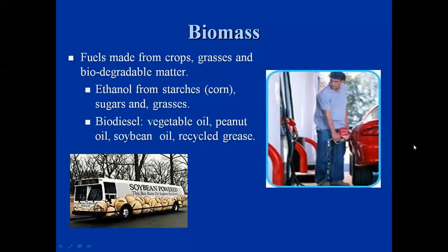Most of us are more familiar with making fuel from crops, grasses, and biodegradable matter. One of the more well-known is making ethanol used as an additive to gasoline in our cars — the primary source is corn, but sugars and certain grasses can also be broken down into alcohol. On the biodiesel front, we could use vegetable oil, peanut oil, soybean oil, and recycled grease from restaurants once it's cleaned. You can burn any of these in an existing diesel-powered vehicle.